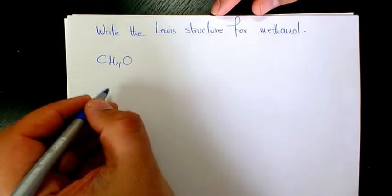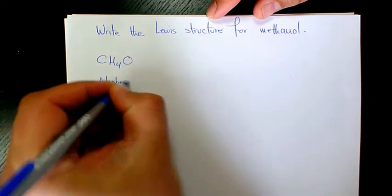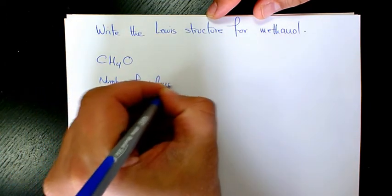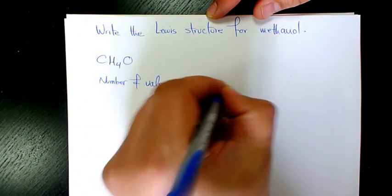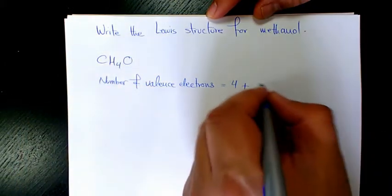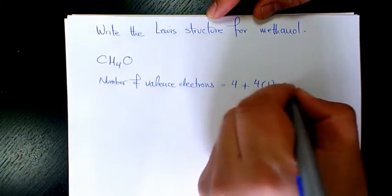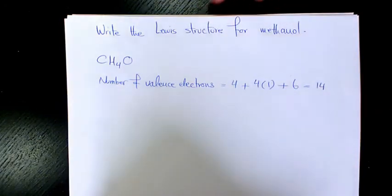First thing I'm going to do, I'm going to count the number of valence electrons. Carbon is four, hydrogen is one so we have four of them, four times one. Oxygen is six, so it's going to be 14 electrons.